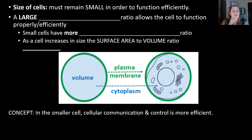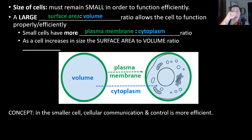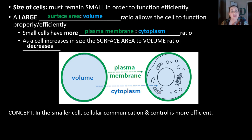Cells have to remain small for a reason — they need to stay efficient in how they function. A large surface area to volume ratio is needed in order for a cell to function properly. This means that small cells have more plasma membrane, the outer edge, compared to the cytoplasm or fluid inside of the cell. This allows the cell to control what's going on better. As a cell increases in size, the surface area to volume ratio starts to decrease, which means the cell is going to be less efficient.